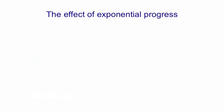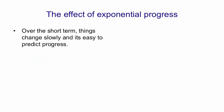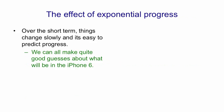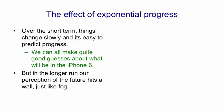The development of technology is also typically exponential. So over the short term, things appear to change fairly slowly, and it's easy to predict progress. All of us, for example, can probably make quite good guesses about what will be in the iPhone 6. But in the longer run, our perception of the future hits a wall, just like with fog.